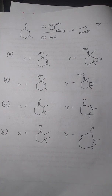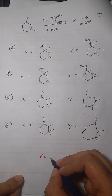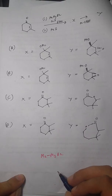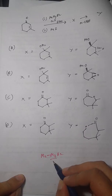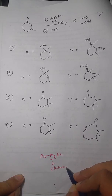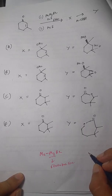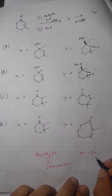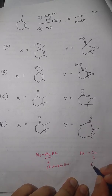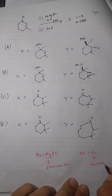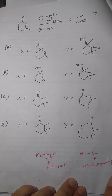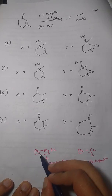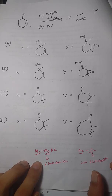First, MeMgBr: magnesium is quite electropositive in nature, so the bond between methyl and magnesium is quite polar. Now, if copper is attached instead, copper is less electropositive than magnesium, so the polarity between the carbon-copper bond is less compared to the carbon-magnesium bond.